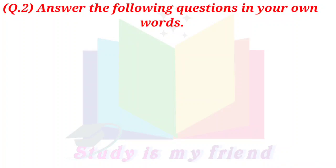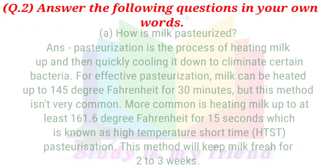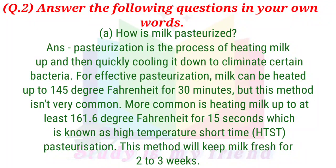Question 2: Answer the following questions in your own words. a. How is milk pasteurized? Pasteurization is the process of heating milk up and then quickly cooling it down to eliminate certain bacteria. For effective pasteurization, milk can be heated up to 145 degrees Fahrenheit for 30 minutes, but this method isn't very common. More common is heating milk up to at least 161.6 degrees Fahrenheit for 15 seconds, which is known as High Temperature Short Time, or HTST, pasteurization. This method will keep milk fresh for 2 to 3 weeks.